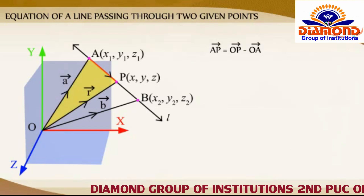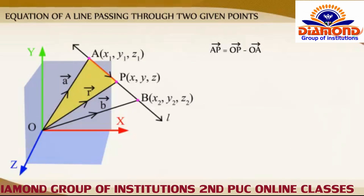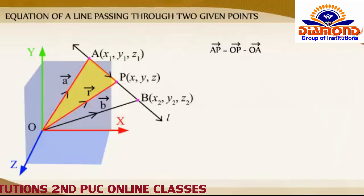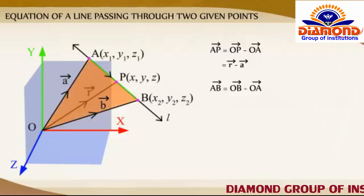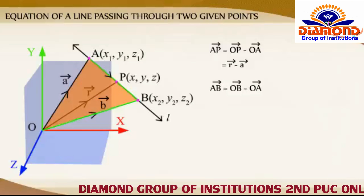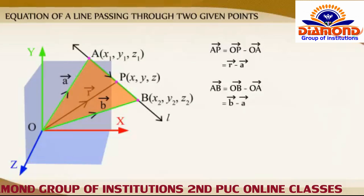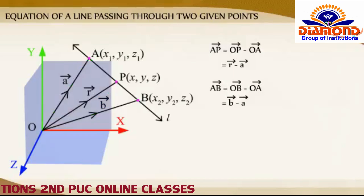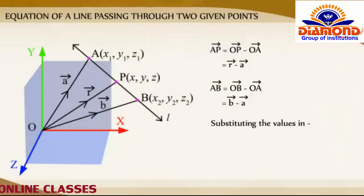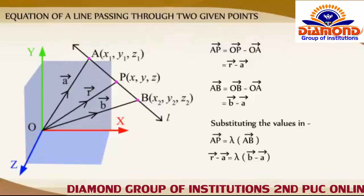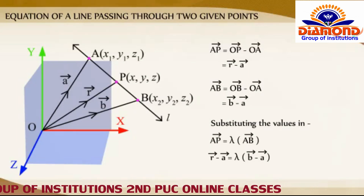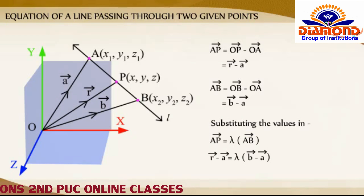Vector AP is equal to vector OP minus vector OA, that is R vector minus A vector. Similarly, vector AB is equal to vector OB minus vector OA, that is B vector minus A vector. Substituting the respective values in vector AP equals lambda times vector AB, we get R vector minus A vector equals lambda times (B vector minus A vector).